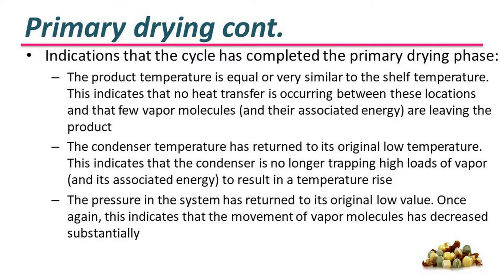There are indications that the cycle has completed the primary drying phase: the product temperature is equal or very similar to the shelf temperature, indicating that no heat transfer is occurring and that few vapor molecules are leaving the product; the condenser temperature has returned to its original low temperature, indicating it is no longer trapping a high load of vapor; and the pressure in the system has returned to its original low value, indicating that the movement of vapor molecules has decreased substantially.